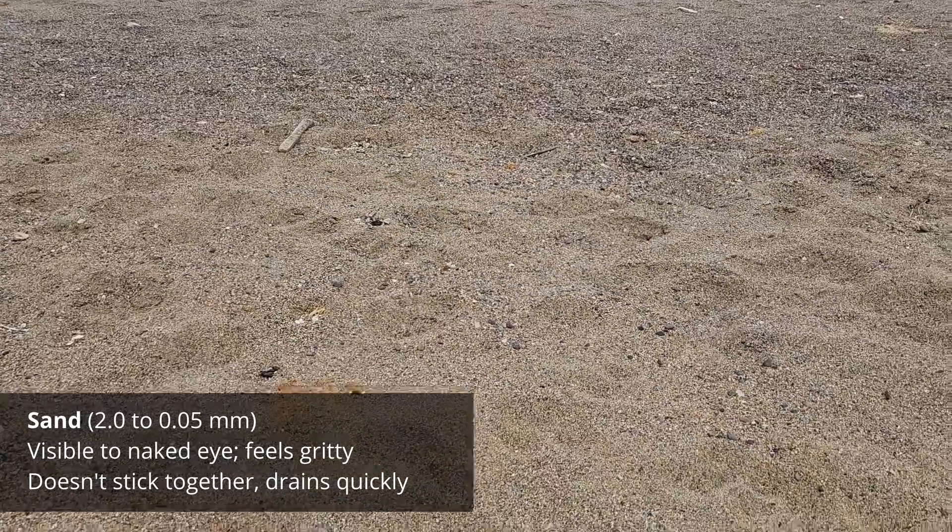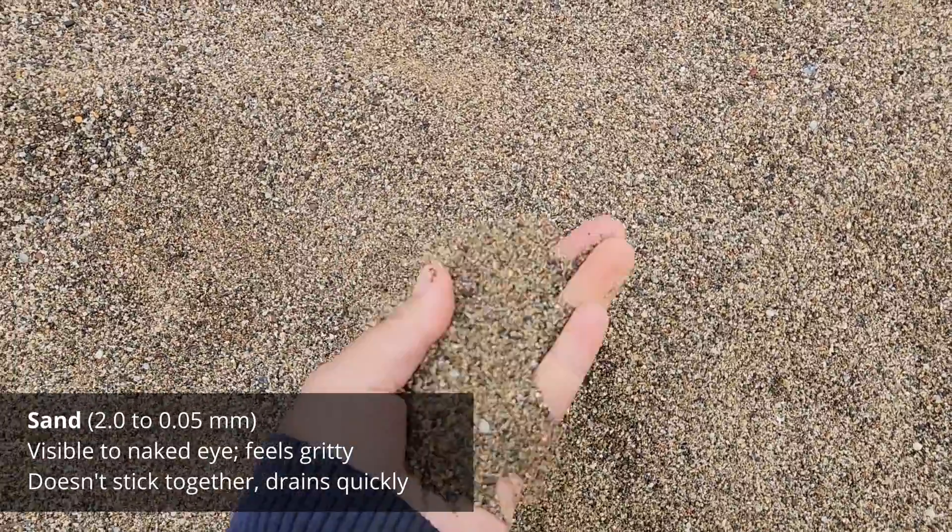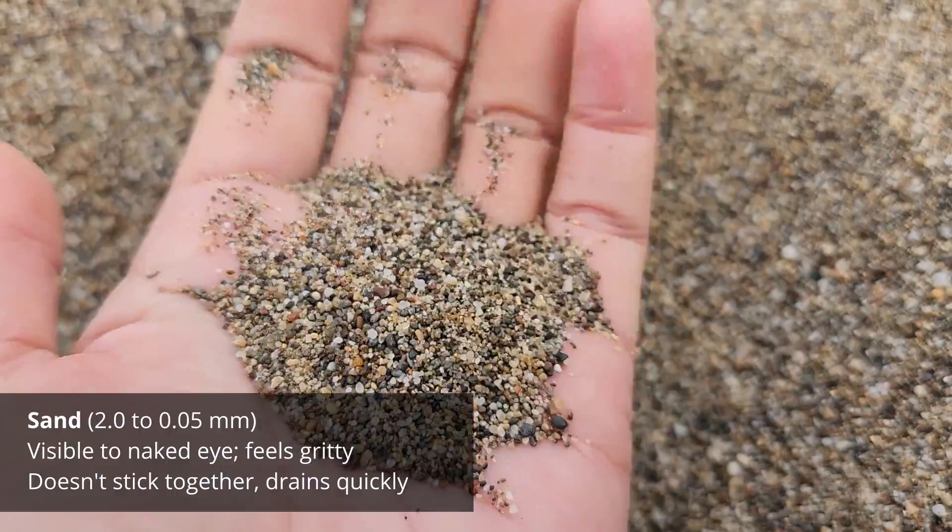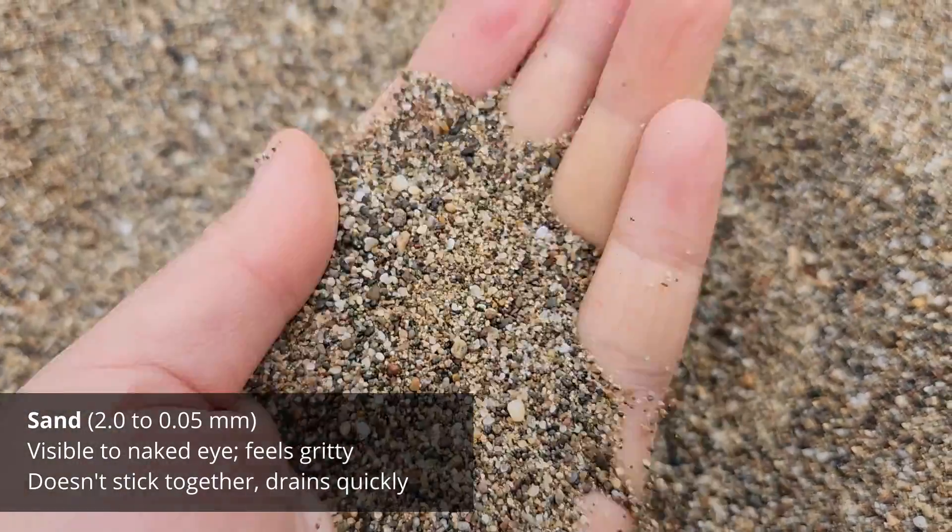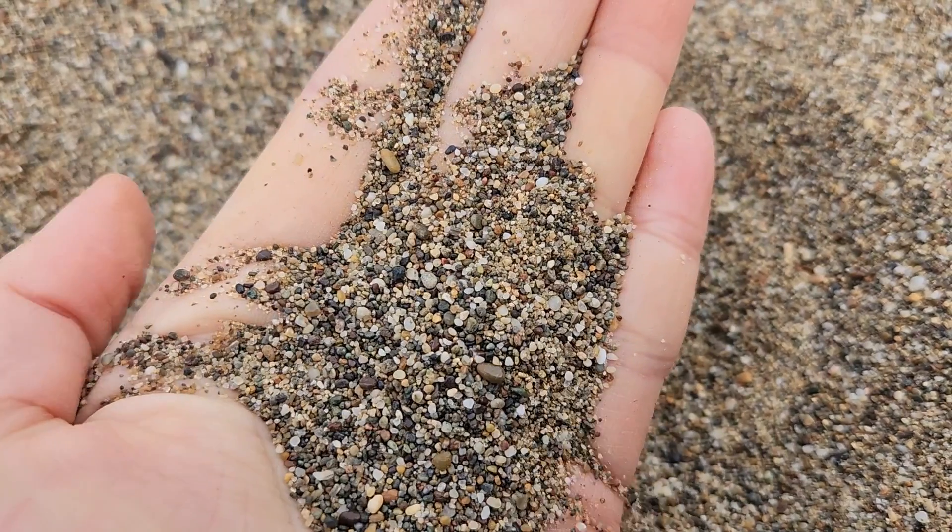Sand particles are between 2 to 0.05 millimeters in size. You know what sand is. You can see the individual grains just with your naked eye and when you rub it together it's going to feel gritty but they don't stick together.